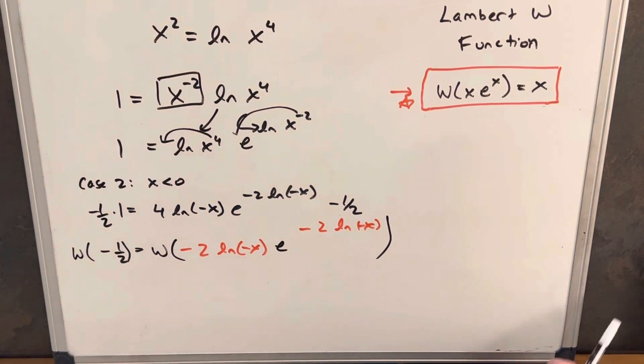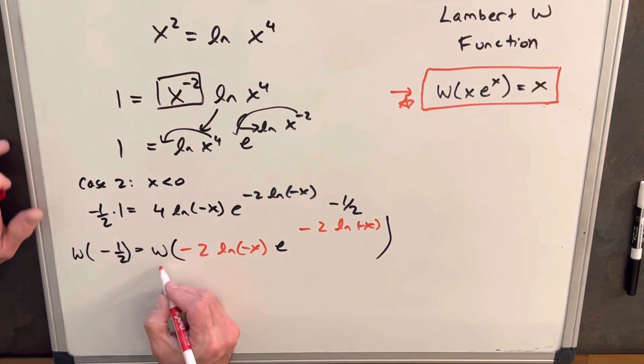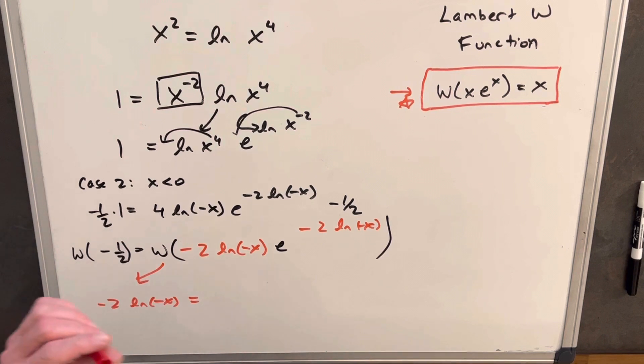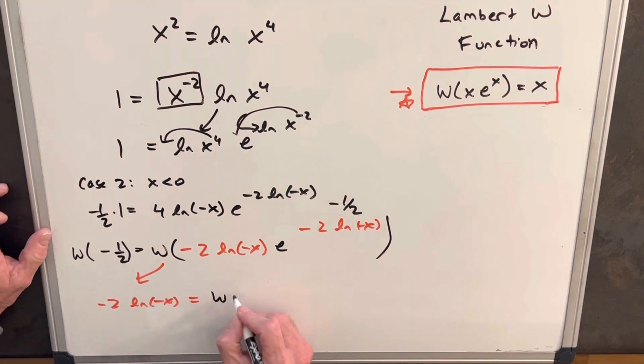Then again, I'm just going to flip sides, and so this will produce minus 2 ln negative x equals Lambert W of minus 1/2.